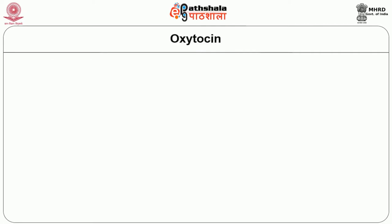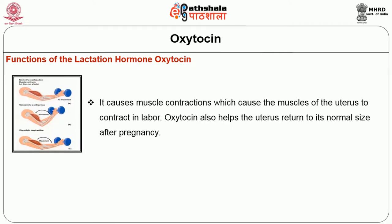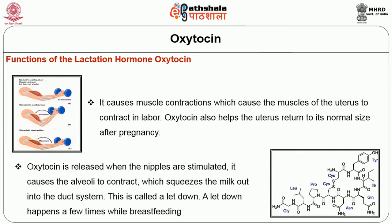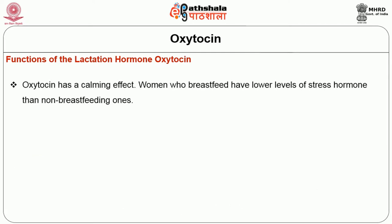Next is oxytocin. The functions of oxytocin in lactation are many: it causes muscle contraction of the uterus during labor, and helps the uterus return to its normal size after pregnancy. Oxytocin is released when the nipples are stimulated, causing the alveoli to contract, which squeezes milk out into the duct system. This is called the let-down. A let-down may happen a few minutes into or a few times while breastfeeding. Oxytocin also has a calming effect.